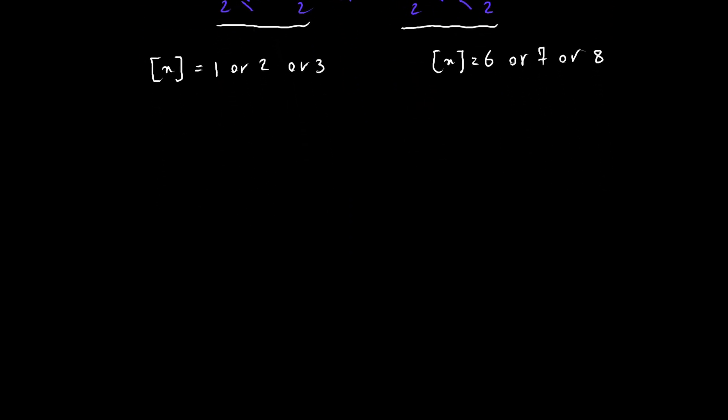Our original equation is 4x squared minus 40 times floor of x plus 51 equals 0. Before plugging in, notice that floor of x is either 1, 2, 3, 6, 7, or 8, meaning x is a positive quantity, so we can ignore any negative solutions as invalid.